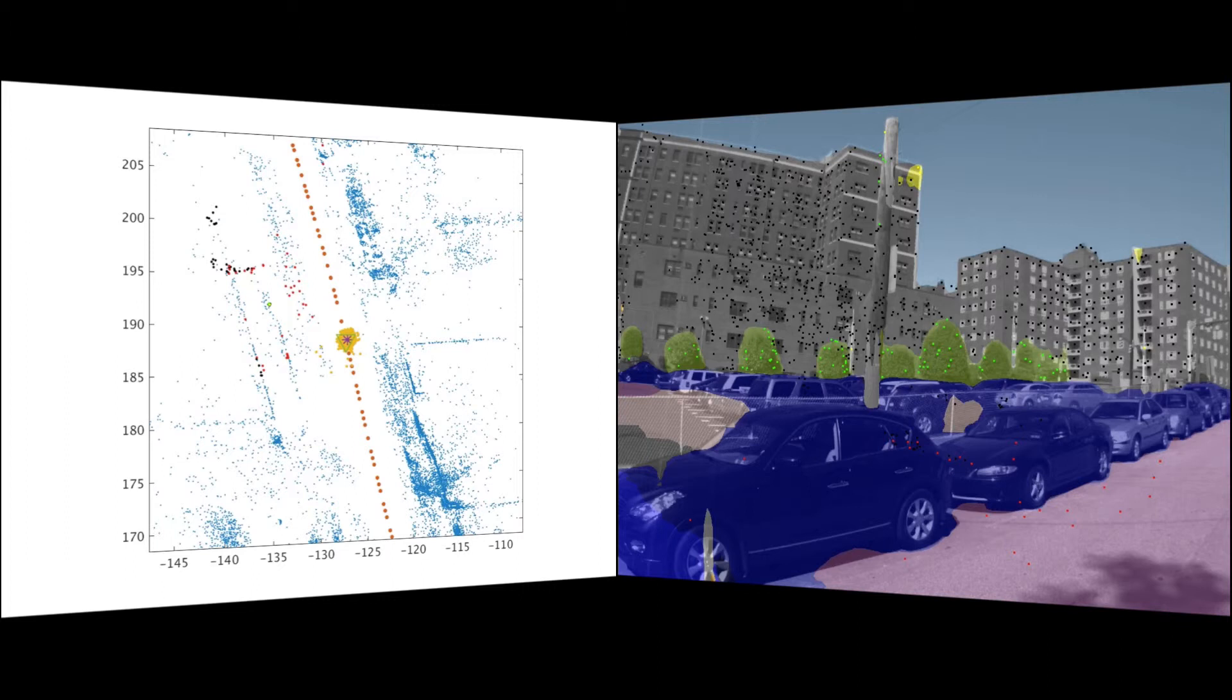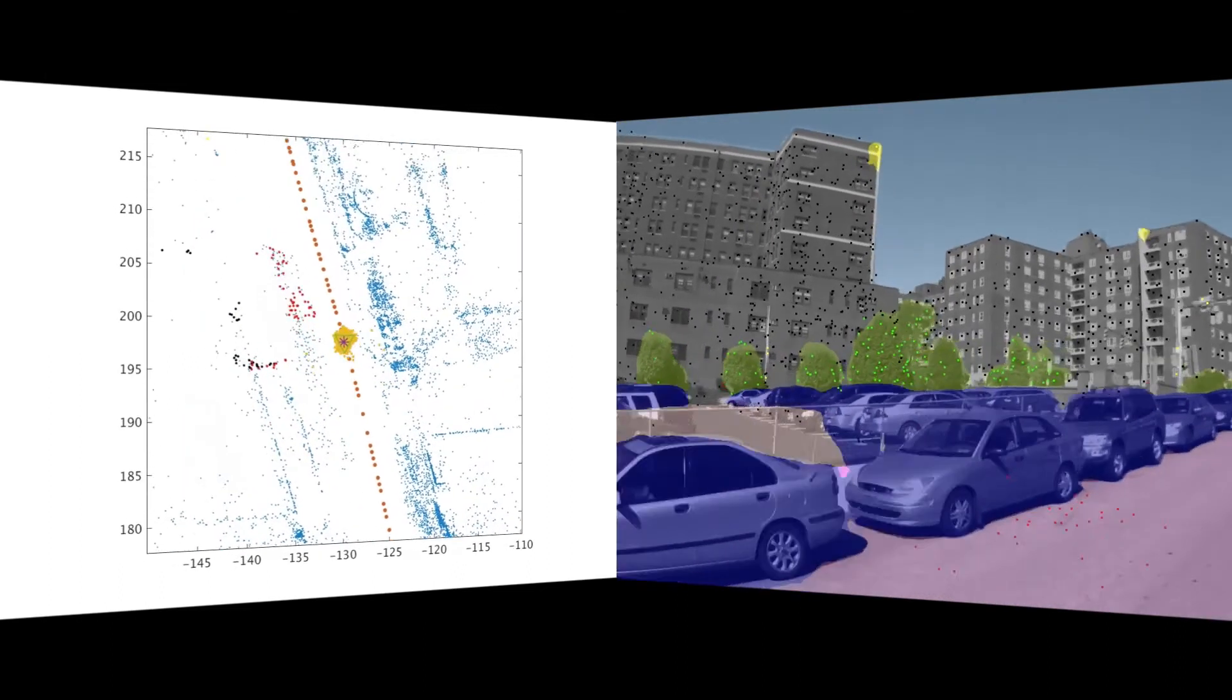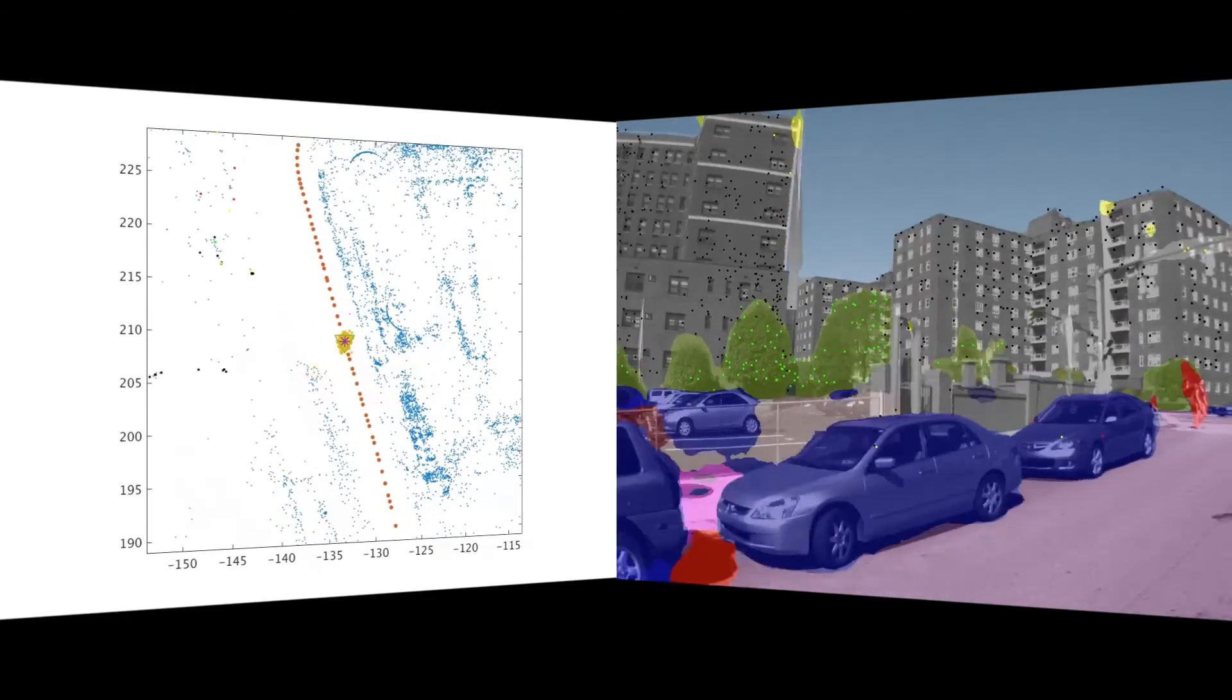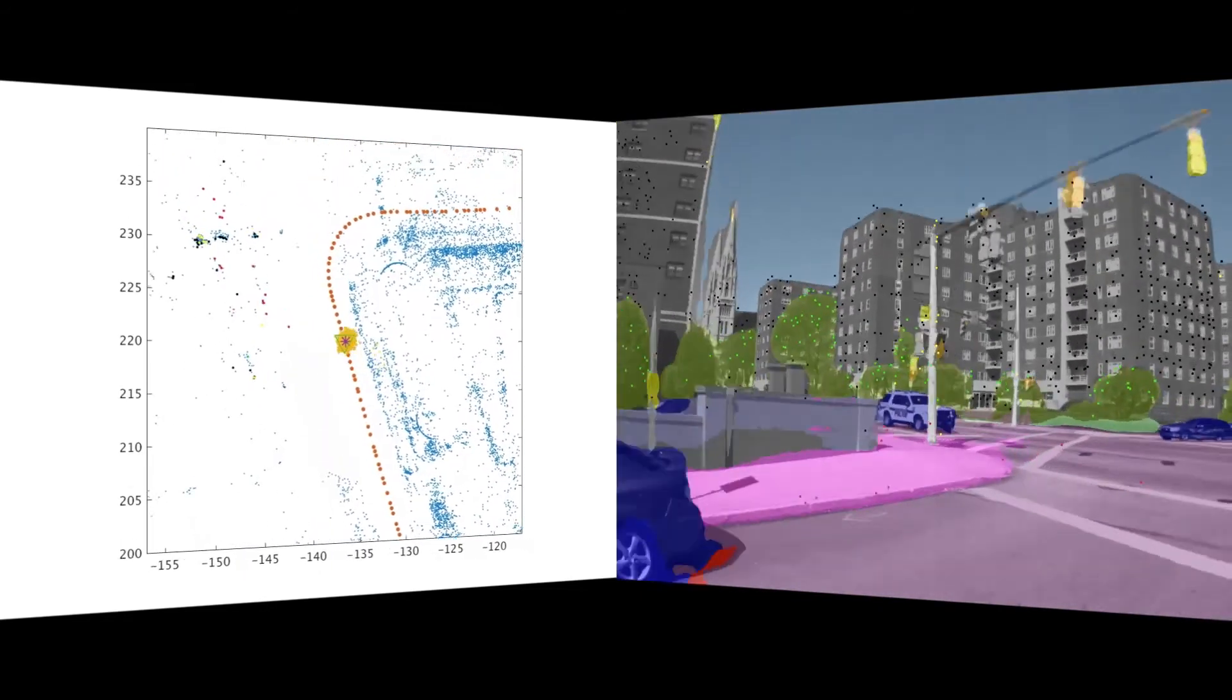When we now run our particle filter, we will see the position of the particles in yellow in this bird's eye view of our semantic 3D point cloud map to the left. And to the right, we will see the semantic segmentation of our current image and the projected map points for the best scoring particle. The green triangle to the left represents the actual position of the vehicle.